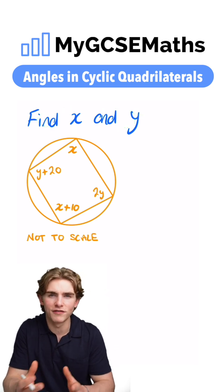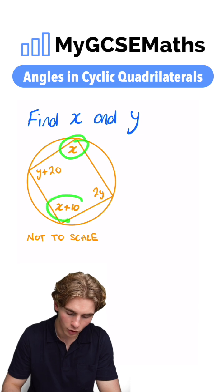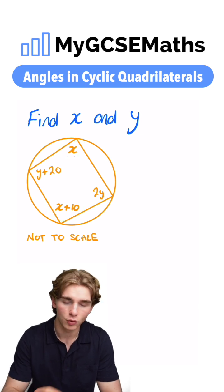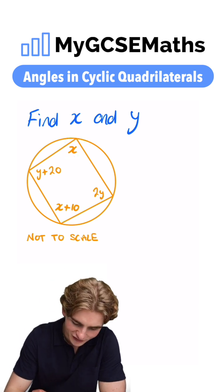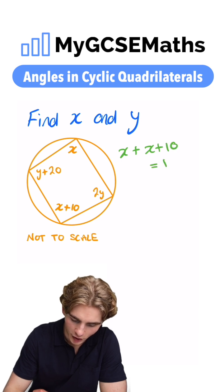Well, we can firstly set up a couple of equations that might help us. We know that this angle and this angle, when we add them together, have to be equal to 180. So we can say that x plus x plus 10 is equal to 180.